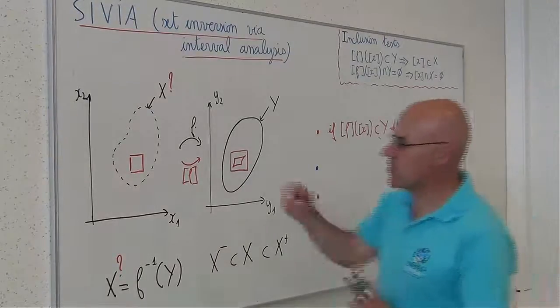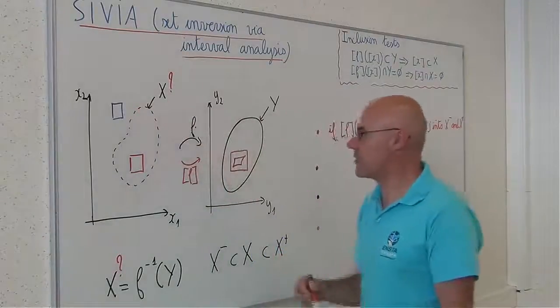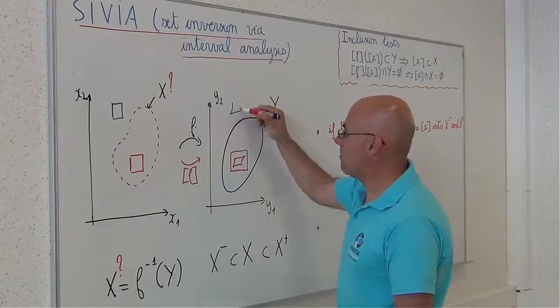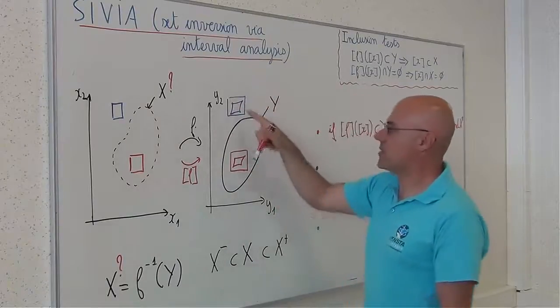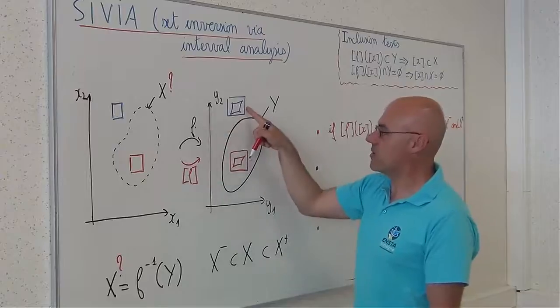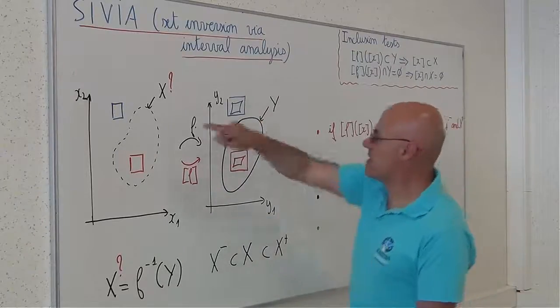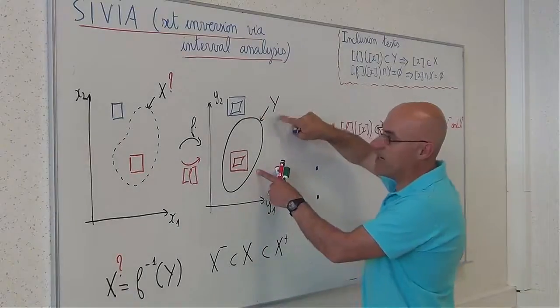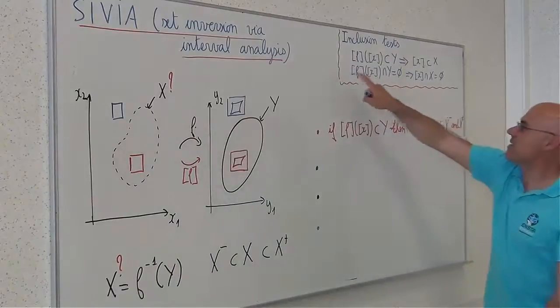Another situation, consider a box which is outside x. Its inclusion function may be like this. It is an image by f. This one is an image by the inclusion function. And since this box is outside y, I can conclude, thanks to this inclusion test, that this box is outside x.